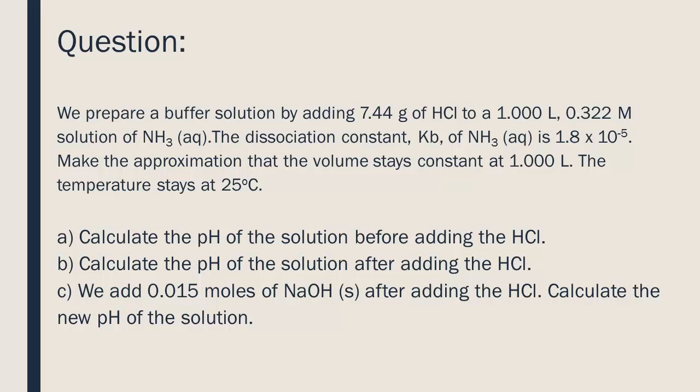Part A: Calculate the pH of the solution before adding the HCl. Part B: Calculate the pH of the solution after adding the HCl. Part C: We add 0.015 moles of NaOH after adding the HCl. Calculate the new pH of the solution.